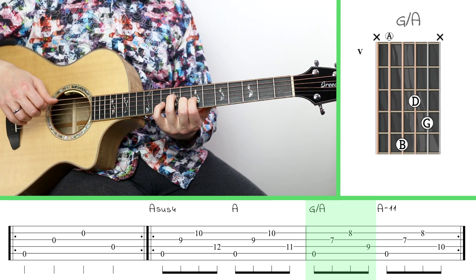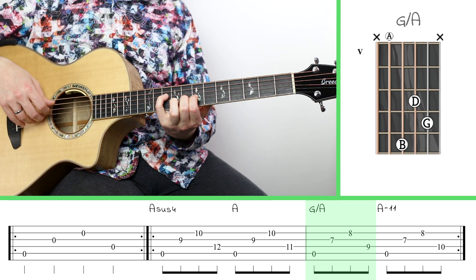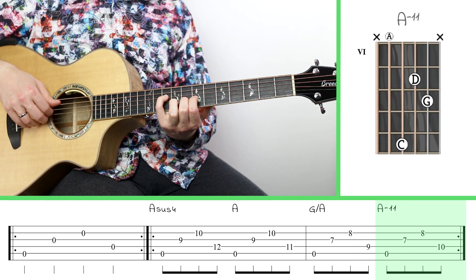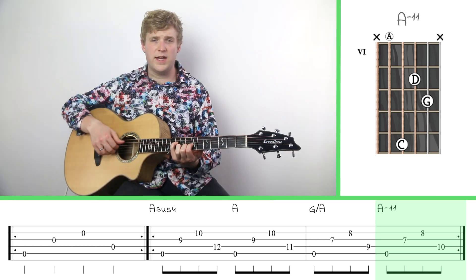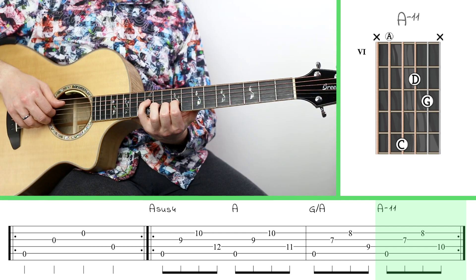Then I'm going to do the opposite of what I just did. I'm going to lift up my ring finger and replace it with my pinky on the 10th fret. That turns this into an A minor 11 chord. Really nice chord, a little bit jazzy, but let's not hold that against it. So here are the chords.